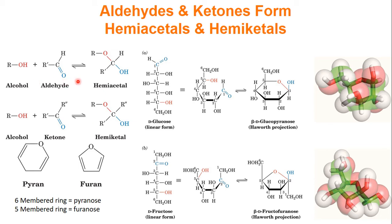This process happens in sugars as well. Sugars have a carbonyl carbon and they have an alcohol. What usually happens is that the chiral carbon furthest away from the carbonyl carbon — that alcohol group — will come and attack the carbonyl carbon, and you form a ring. You can form six-membered rings and five-membered rings doing this.